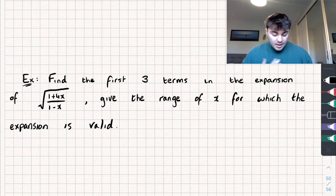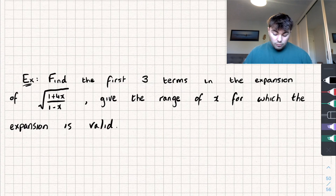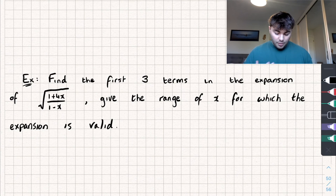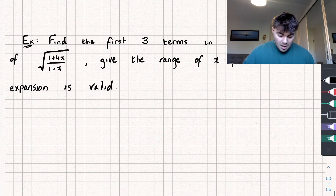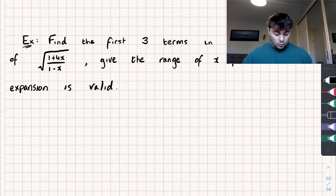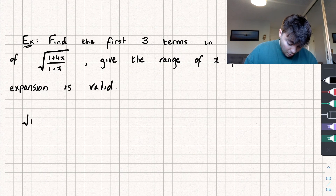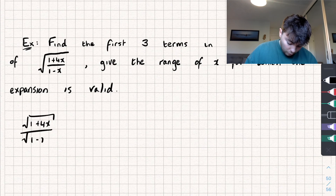In the second question we need to find the first three terms in the expansion of √(1+4x) divided by (1-x), and we need to give the range of x for which the expansion is valid. We'll start by finding the first three terms by rewriting it: distributing the square root across the numerator and denominator, giving √(1+4x) divided by √(1-x).